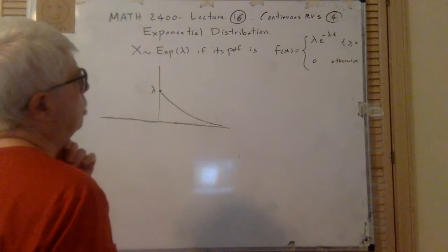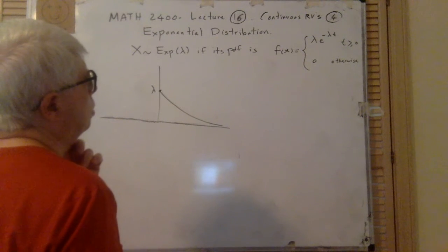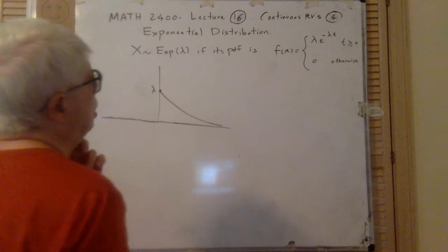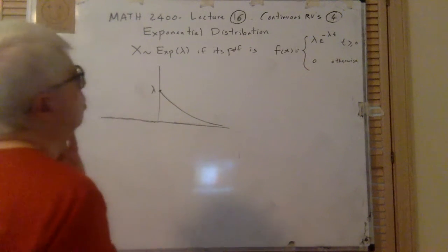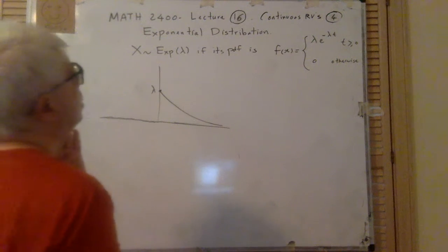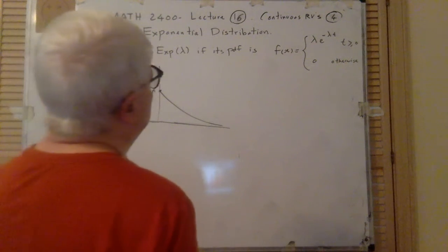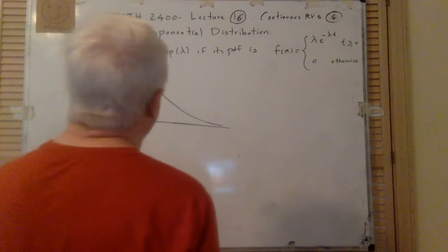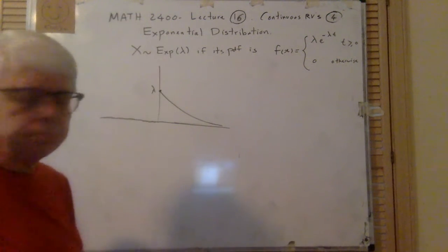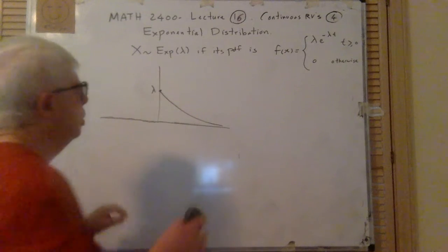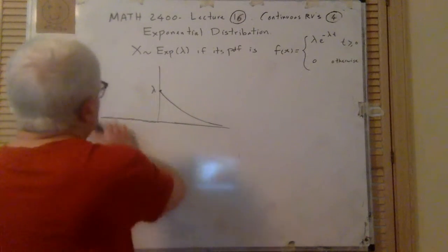Let's find two things: first, the expected value, and then the variance. The expected value is this — let me try to find it for you.